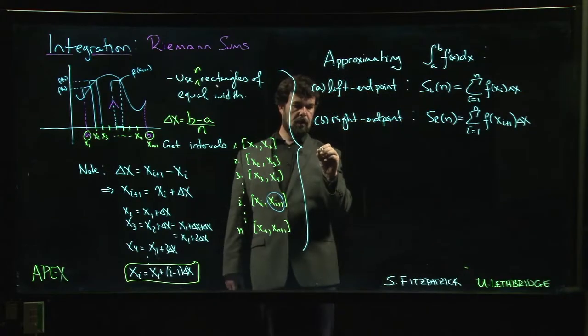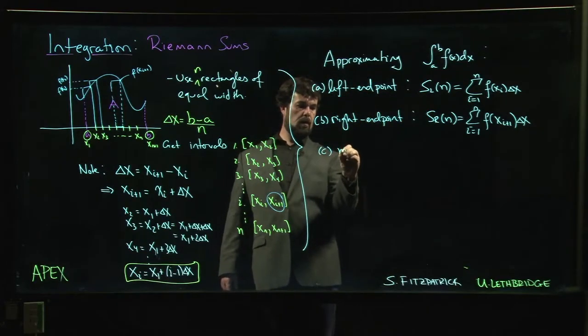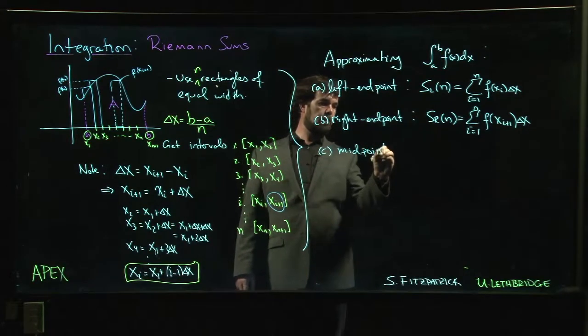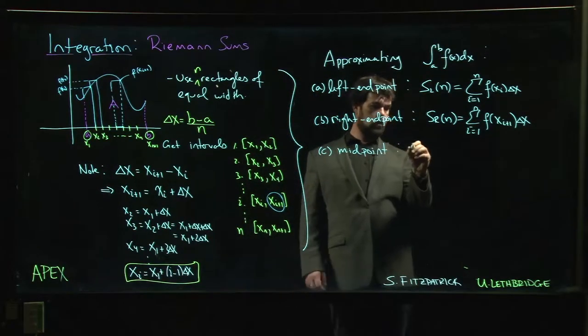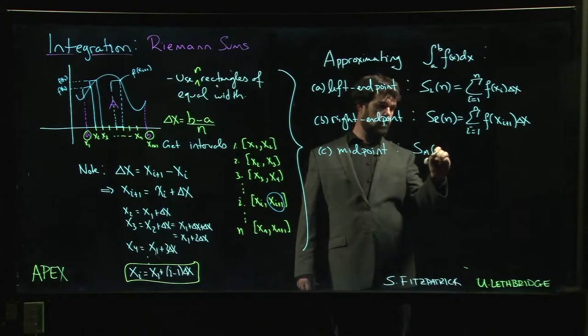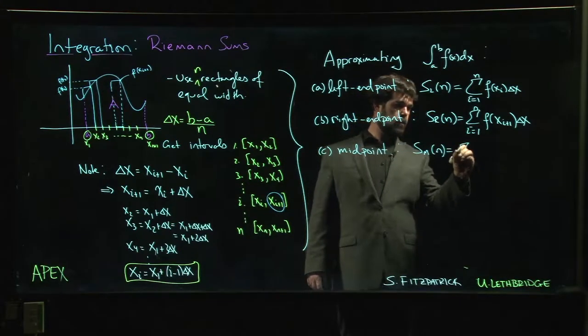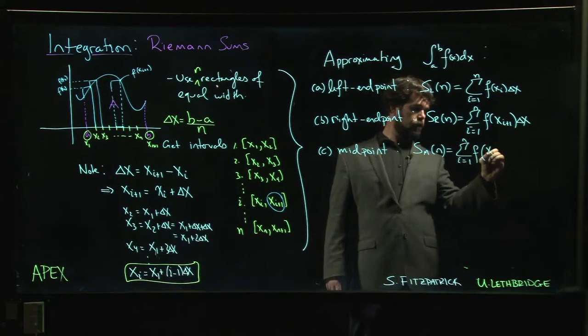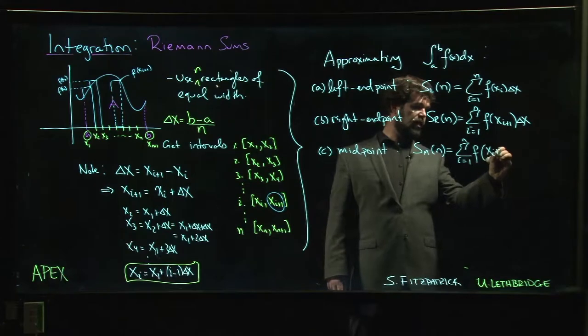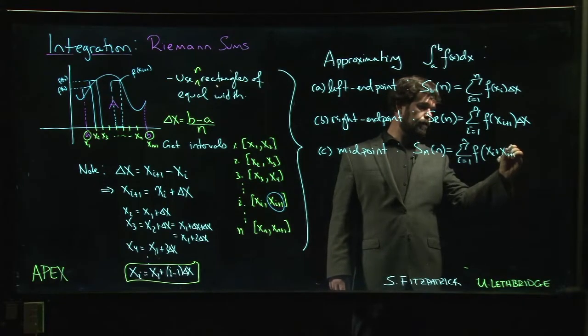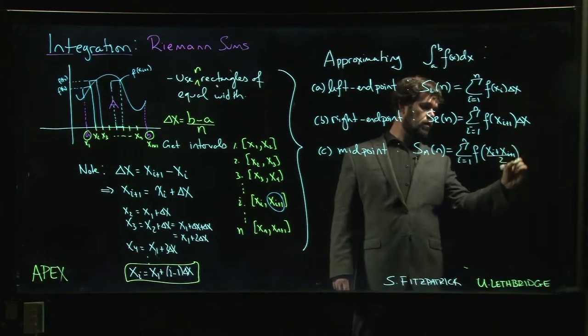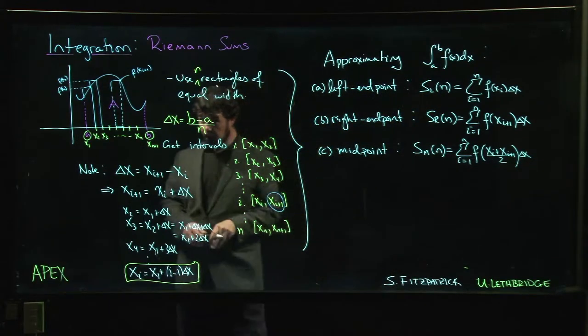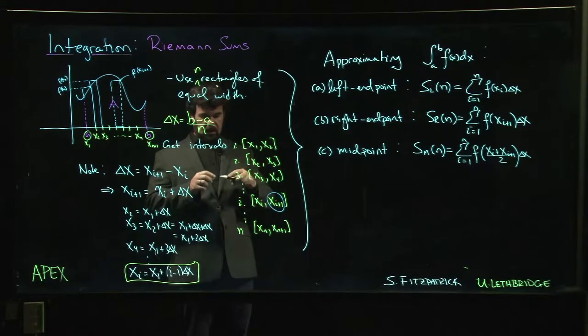Okay, and you could also do a midpoint approximation. So the midpoint is just the average of the two endpoints. You go halfway in between x_i and x_i plus 1.